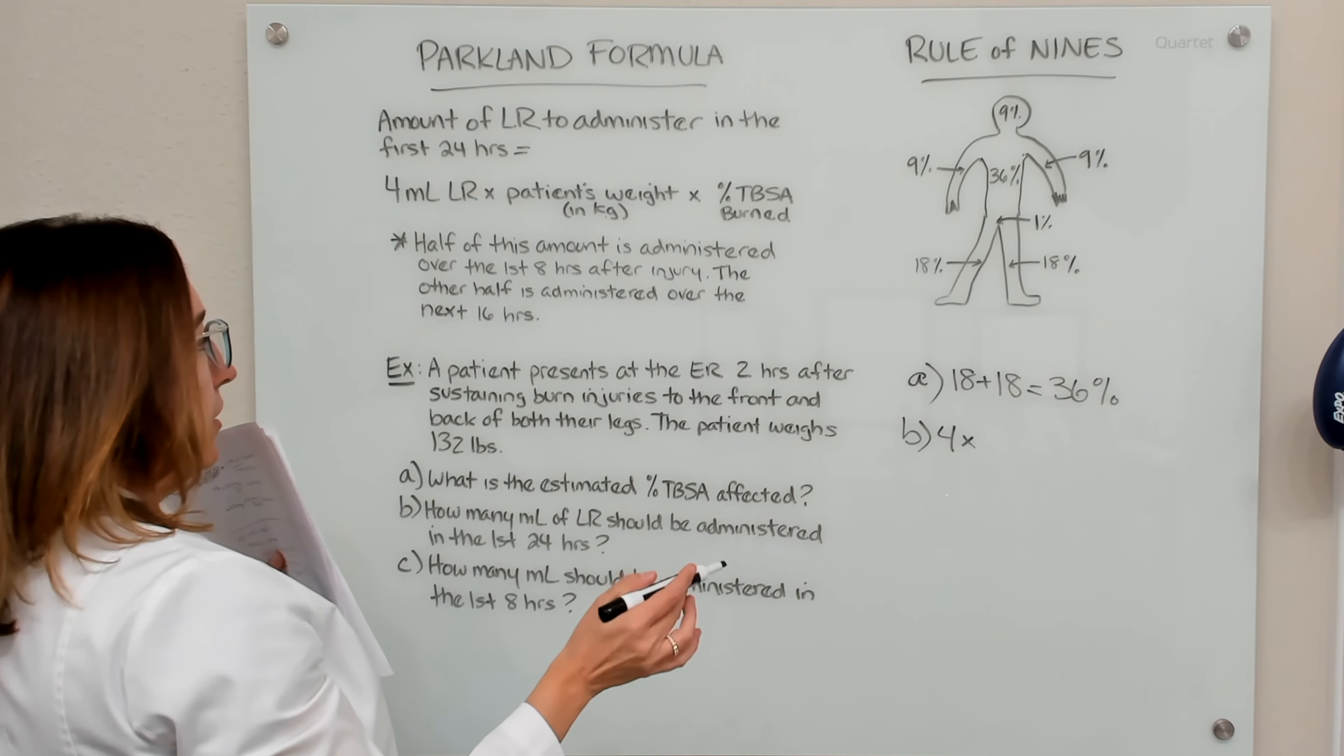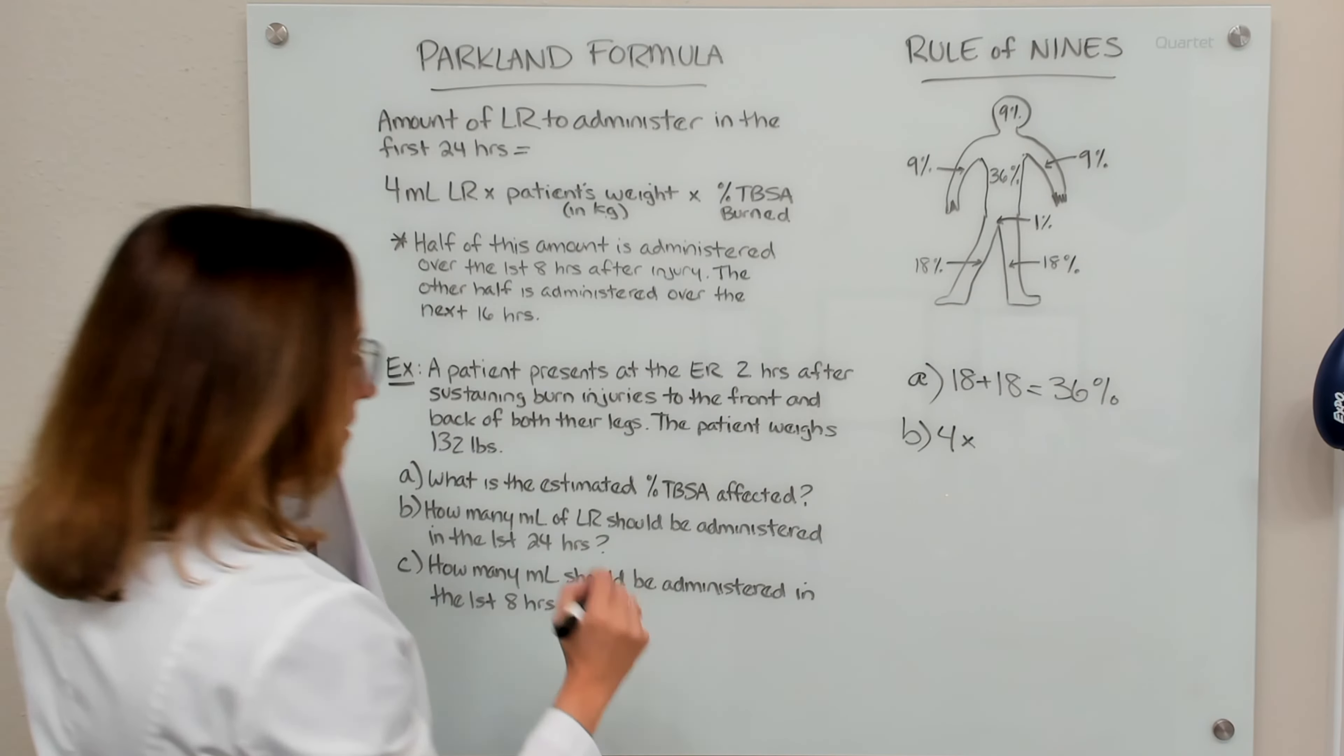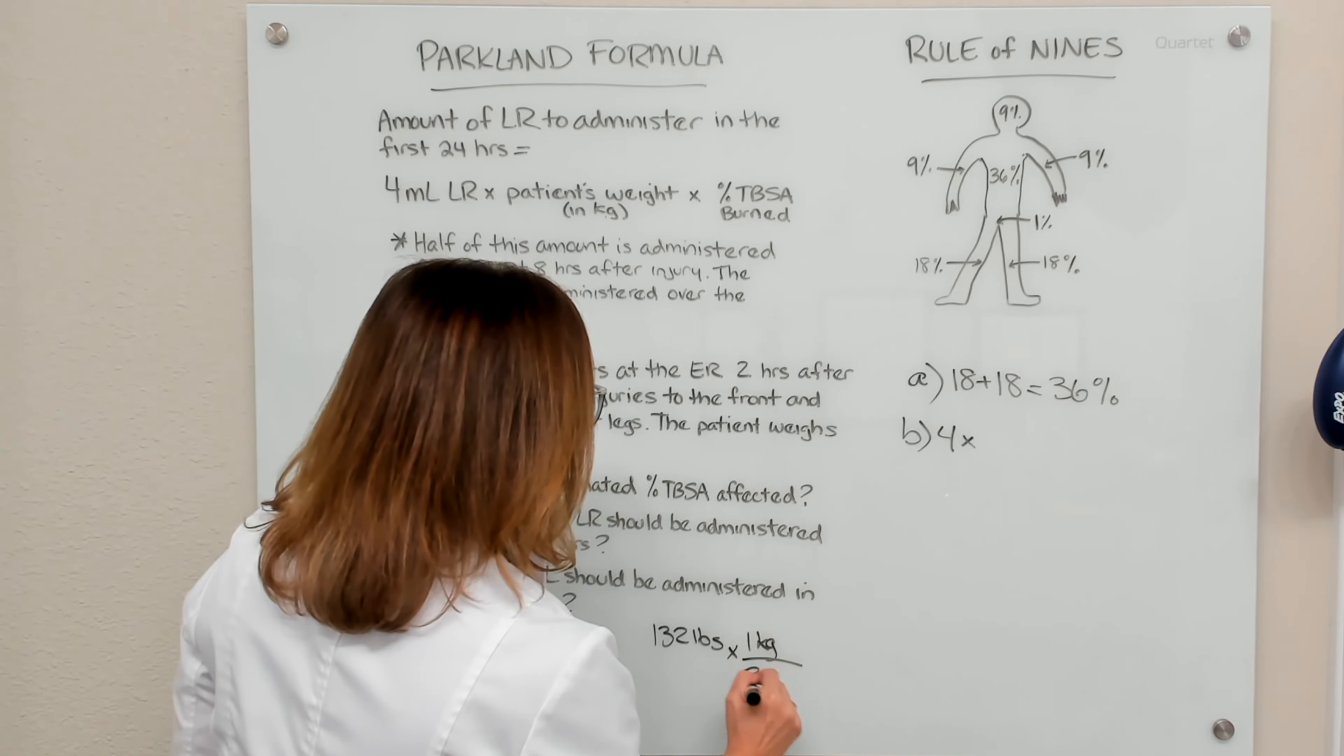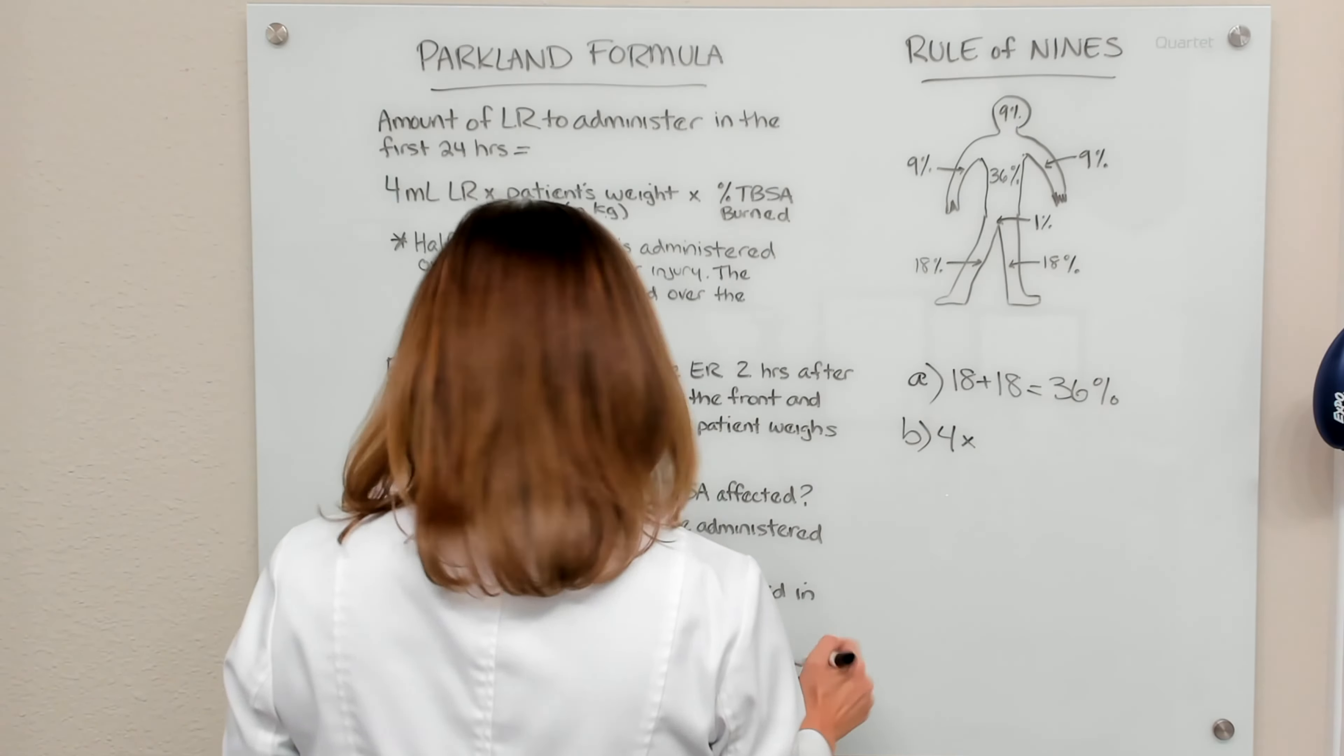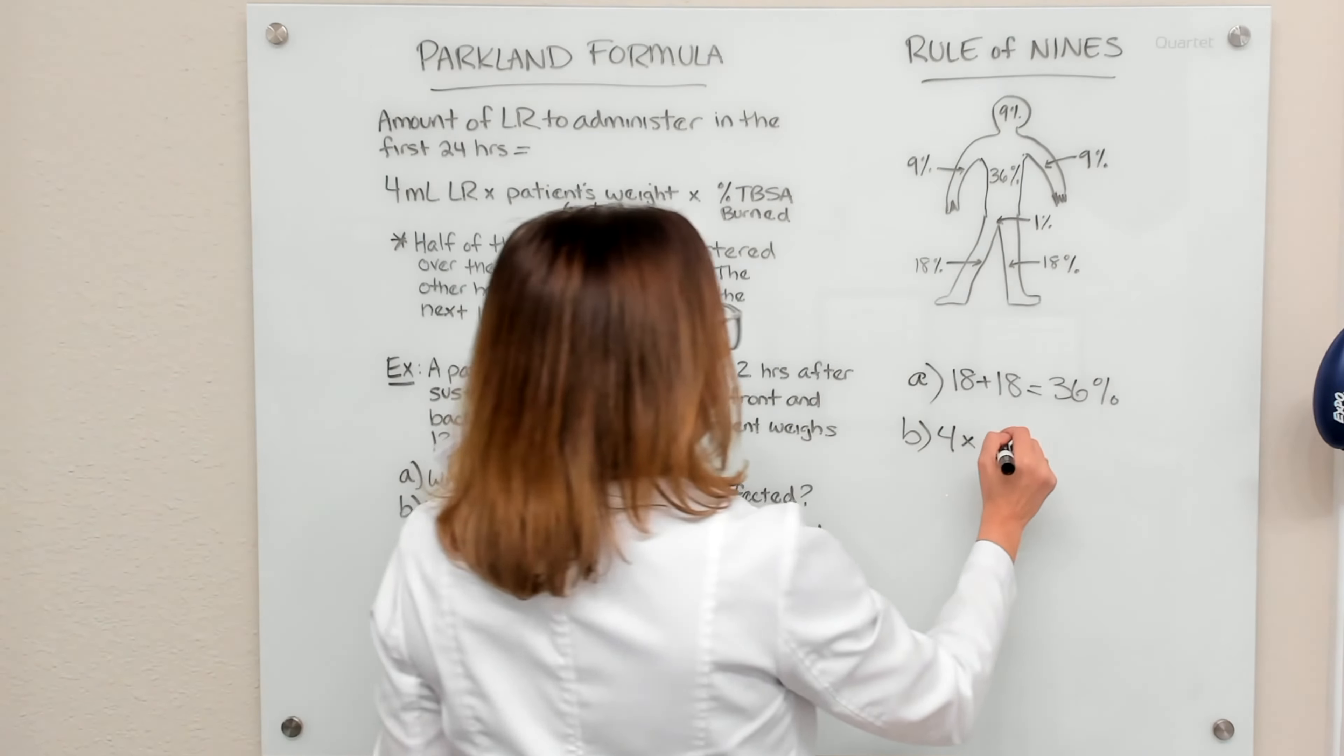Because our patient weighs 132 pounds, but that is not their weight in kilograms. So if I take 132 pounds and I multiply by our conversion factor, which is one kilogram equals 2.2 pounds, or you can simply divide 132 pounds by 2.2, we get 60 kilograms.